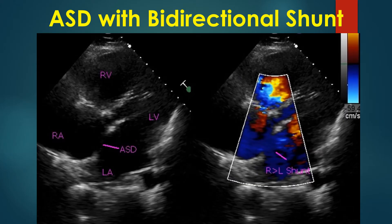Subcostal four-chamber view shows a large defect in the intra-atrial septum. The right atrium and right ventricle are dilated, while the left atrium and left ventricle are not. Blue color on color flow mapping indicates a right-to-left shunt across the atrial septal defect in the subcostal view, as the flow is away from the transducer.